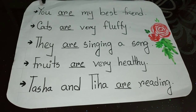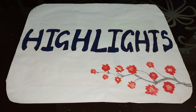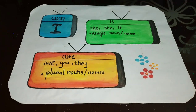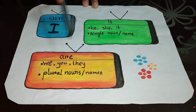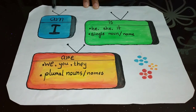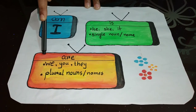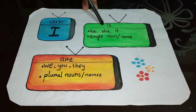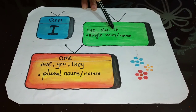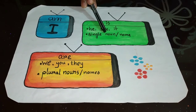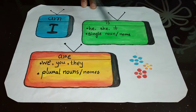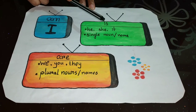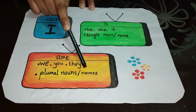And don't forget about 'you.' There are some highlights for you. Let's revise the full class. I have drawn three televisions here. The first one is MTV — in MTV, only 'I' stays, so we use Am. The second one is STP — in STP, he, she, it, and single nouns stay, so we use Is. The third one is RTV — in RTV, we, you, they, and plural nouns or names stay, so we use Are.